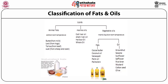On screen you can see a figure depicting that lipids can be of three categories: animal fats, marine oils and vegetable oils. Animal fats are solid at room temperature; examples are butter, lard, tallow and suet. Marine oils include cod liver oil, shark oil, halibut oil and whale oil. Vegetable oils are mainly liquid at room temperature — groundnuts, sesame, sunflower, safflower, rice bran, mustard, cottonseed and olive — whereas some vegetable oils are solid at room temperature like coconut oil, vanaspati, palm oil and cocoa butter.